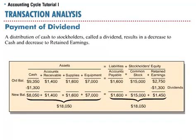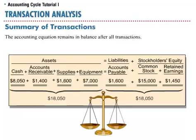Distribution of cash to stockholders, called a dividend, results in a decrease to cash of $1,300 and a decrease to retained earnings of $1,300. These transactions result in the following balances in the individual asset, liabilities, and stockholders' equity accounts. Note that the accounting equation is still in balance after these transactions.